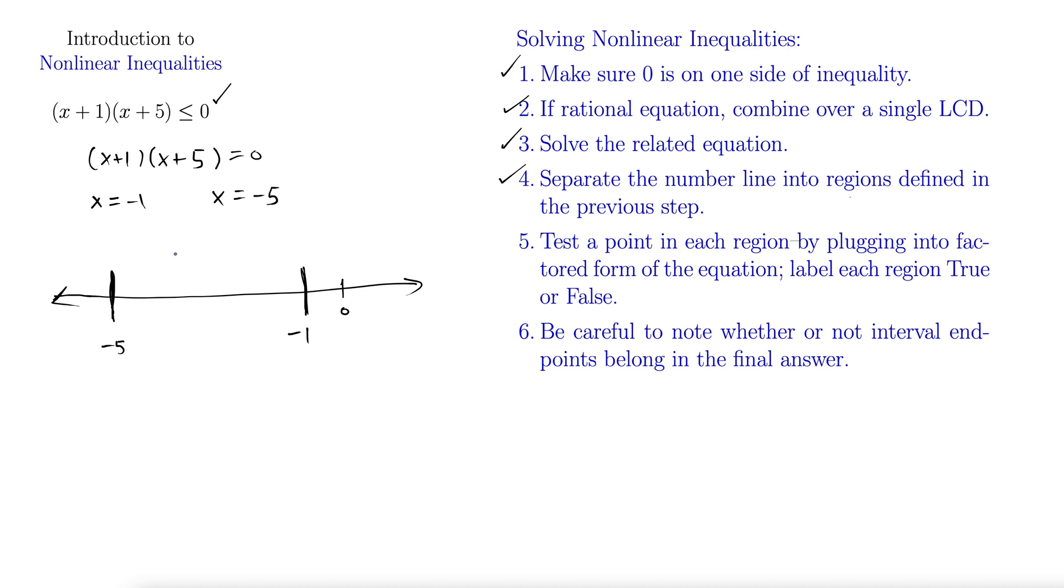So test a point in each region. Let's come up with some test points here. On the right region here, I'm going to test x = 0, because anytime you can test zero, that's going to be the easiest case. In the middle region, let's do x = -2. So this is what I'm going to test in blue here. And then over here on the left, let's do x = -6. And then I like to make a little chart. So here's my test, and here's my f(x) = (x + 1)(x + 5). And then you test like this. You don't have to completely compute these. You just need to know if each factor is positive or negative. And notice that this is in factored form. You always want this to be in factored form.